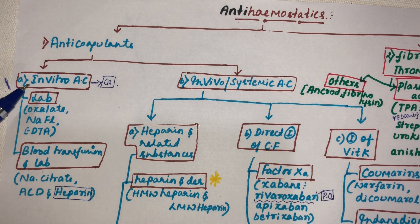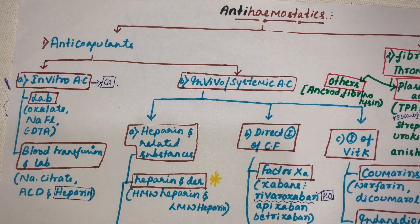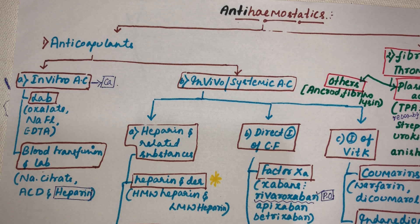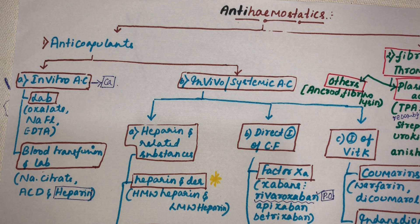In vitro anti-coagulants, as the name suggests, work outside the body. They are used for laboratory purposes or for blood transfusion — situations where you don't want blood to clot. For laboratory diagnostic purposes like complete blood count, an anti-coagulant must be added to stop clot formation.